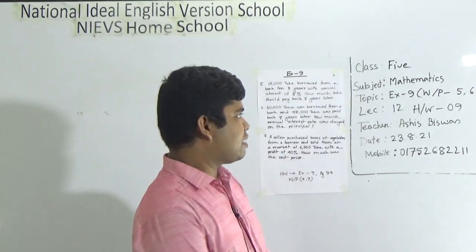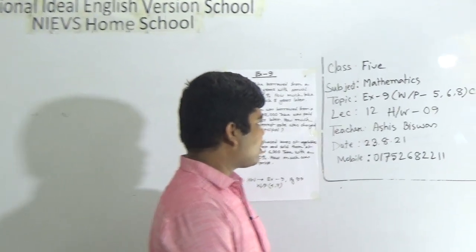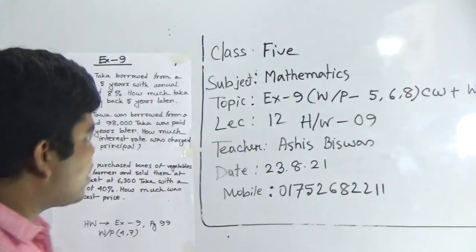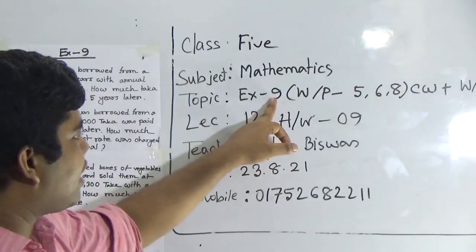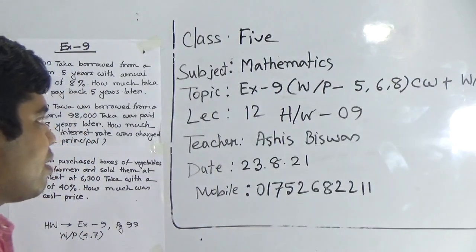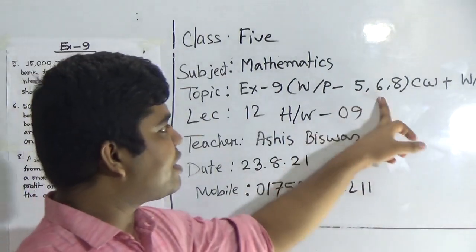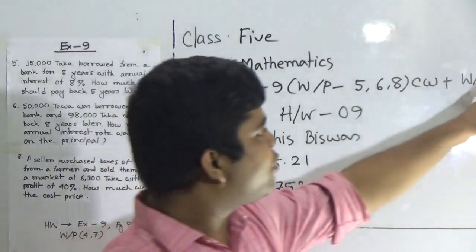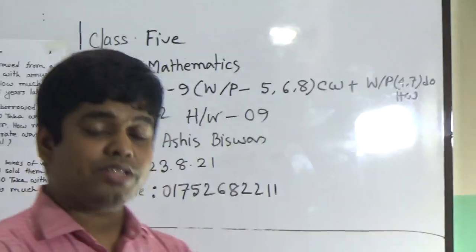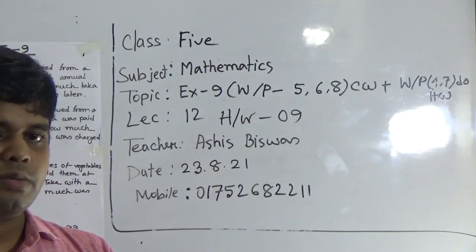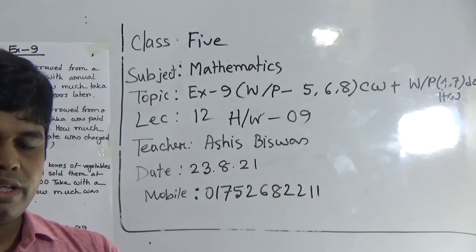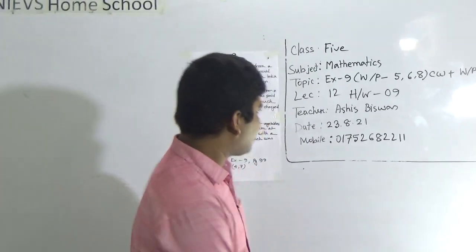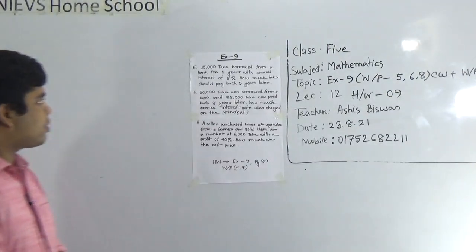Today is our lecture number 12 and today's SWO number 9 of annual exam. Our today's topic is exercise 9. From exercise 9 we shall solve problem number 5, 6, and 8 as your CW, and problem number 4 and 7 will be your SW. You must do your assigned SW and submit it regularly in our school campus every Saturday from 9am to 3pm. Let us start our class.